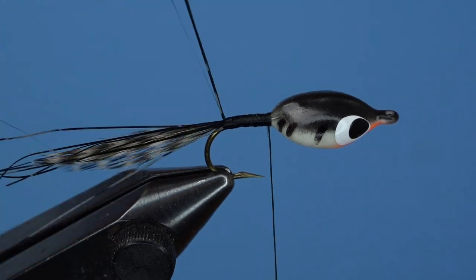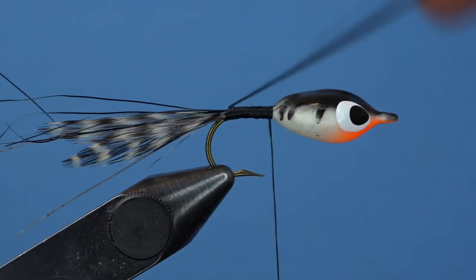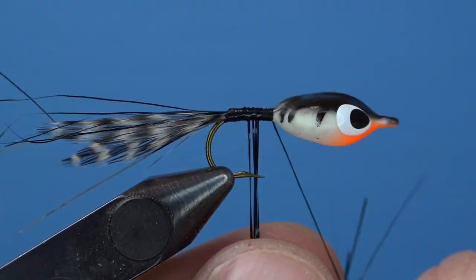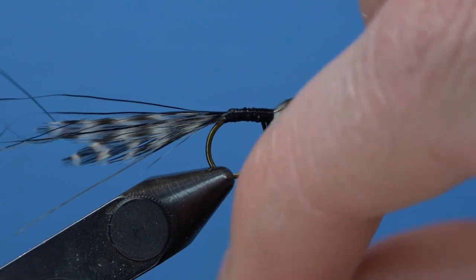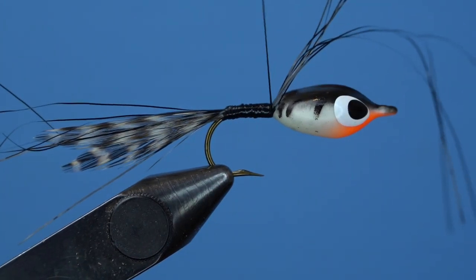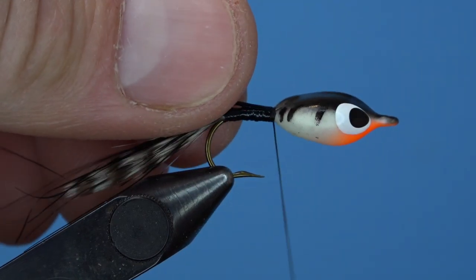Once I get it tied in, I'm going to bring my thread back to the front of the hook, up just behind the foam floaty head. I'm going to take all the remaining fibers of angel hair, the long pieces, and make consecutive wraps with it up the hook shank towards the foam head to make a really sleek, shiny black body.